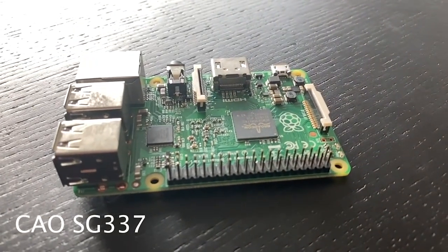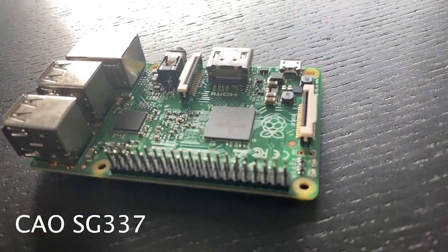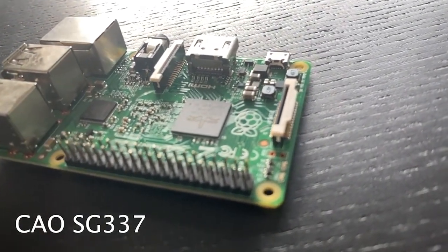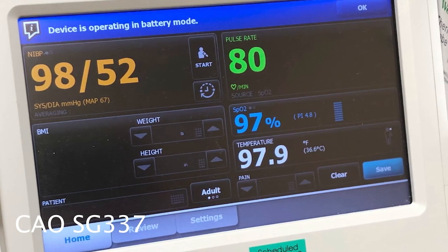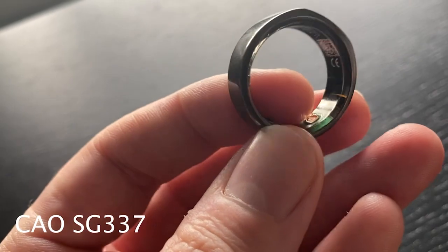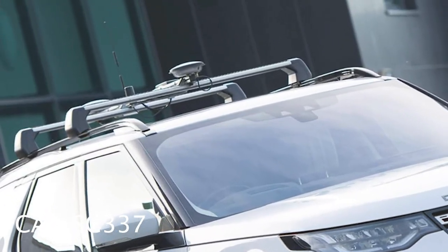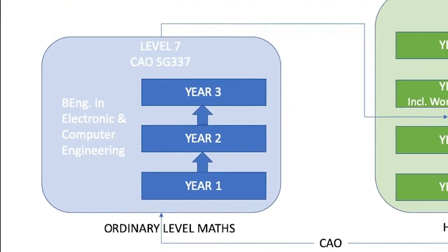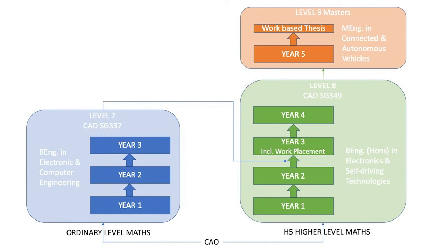If you are interested in technology or engineering but are not doing higher level maths, why not consider our level seven in Electronic and Computer Engineering? This is a three-year programme that looks at the design and development of embedded electronic systems — the medical devices that keep us healthy, the consumer devices that keep us entertained, or the controlled systems that keep us safe on the road. You can then progress to the level eight in Electronics and Self-Driving Technologies, and from there to the masters. Check out the link below for more information.